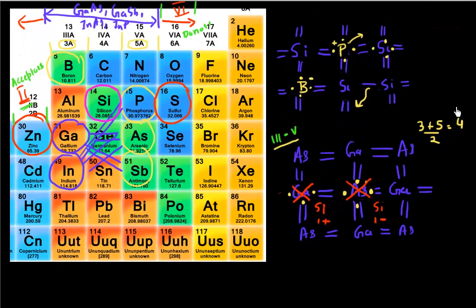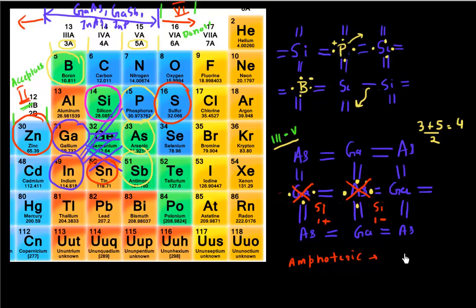It's actually a little more complicated than this, but in general, group four elements act as amphoteric dopants in a three-five semiconductor, meaning they can either act as donors or as acceptors.